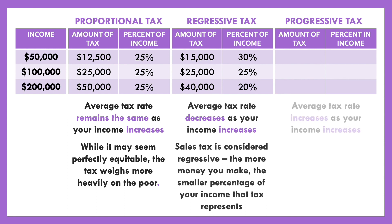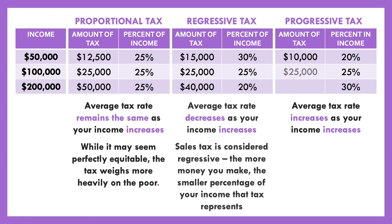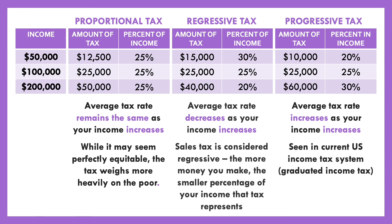The United States uses a progressive tax system, meaning the average tax rate increases as income increases. For example, someone earning $50,000 might pay 20%, someone earning $100,000 pays 25%, and someone earning $200,000 pays 30%. Many people consider this fair — it's why the US income tax is called a progressive or graduated income tax. Based on the ability to pay principle, those who make more have more ability to pay, so they pay more.